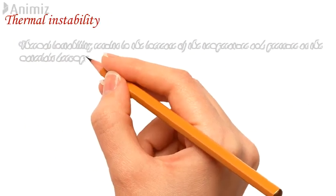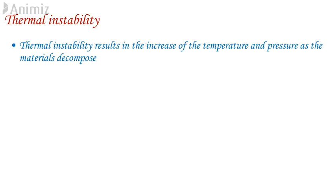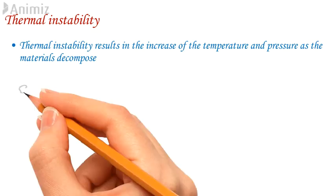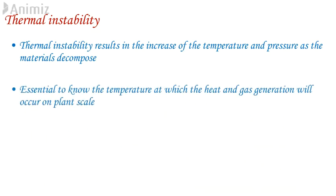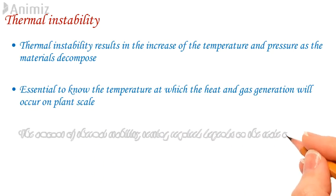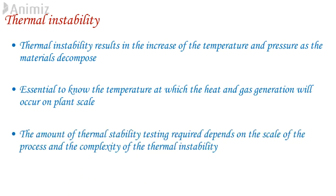Thermal instability results in increases of temperature and pressure as the material decomposes. Therefore, it is essential to know the temperature at which heat and gas generation will occur on plant scale, to ensure that the process material and stream are stable at processing temperature. The amount of thermal stability testing required depends on the scale of the process and the complexity of the thermal instability.